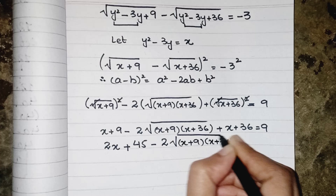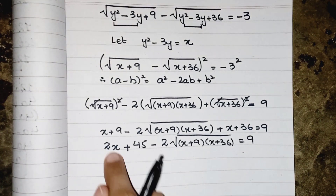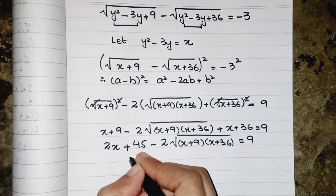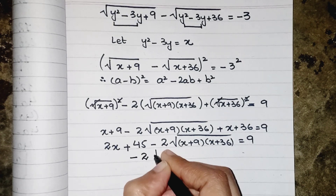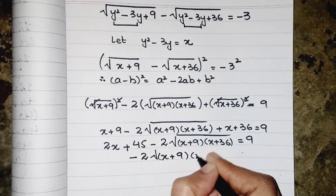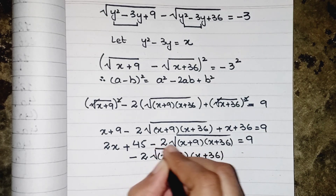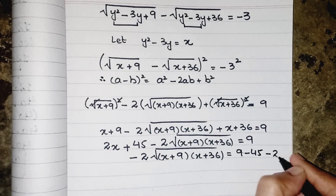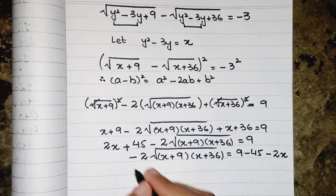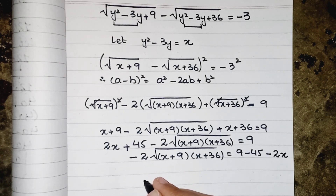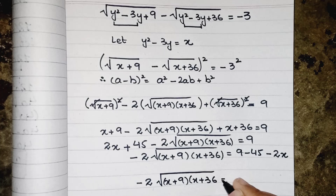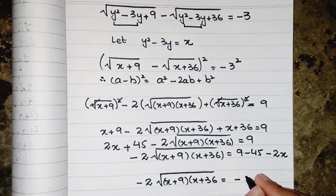So we have 2x plus 45 minus 2 times the square root of (x plus 9)(x plus 36) equals 9. We move the constant to the other side: 2x minus 2 times the square root equals 9 minus 45, and 2x also moves to that side, so it becomes minus 2x. This gives minus 2 times the square root of (x plus 9)(x plus 36) equals minus 36 minus 2x.